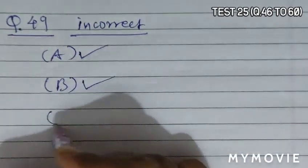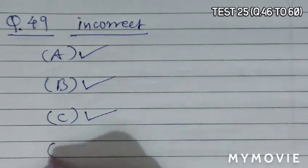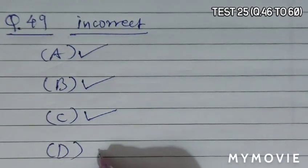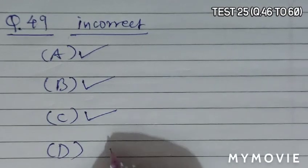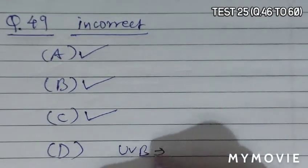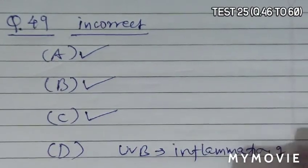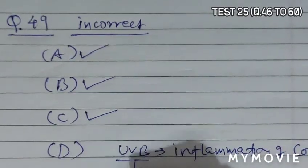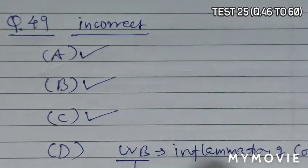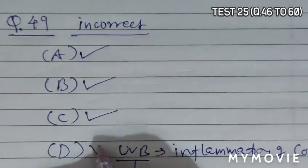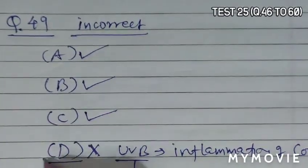B is given that in stratosphere UV rays act on CFC releasing chlorine atoms - it is also correct. Option C: UVB damages DNA and mutation may occur - yes. Option D is given that in human eye, choroid absorbs UVB radiation and a high dose of UVB causes inflammation of choroid, and due to which snow blindness occurs. So D is incorrect. So that becomes the correct answer.